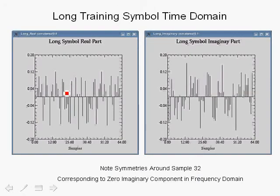Here we show the actual time domain sequences for the long symbol, the real part, and the imaginary part. And because the imaginary part in the frequency domain was 0, we observe symmetry about the 32nd sample over here on the real part and anti-symmetry in the imaginary part.